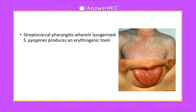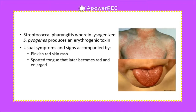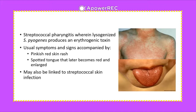Scarlet fever is a streptococcal pharyngitis wherein lysogenized cells of Streptococcus pyogenes produce an erythrogenic toxin. This leads to a pinkish-red skin rash and the characteristic spotted tongue that later becomes red and enlarged. It may also be linked to streptococcal skin infections.